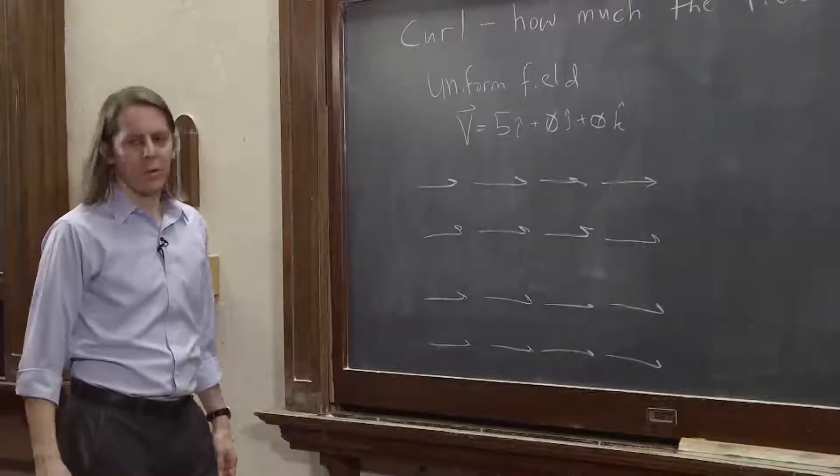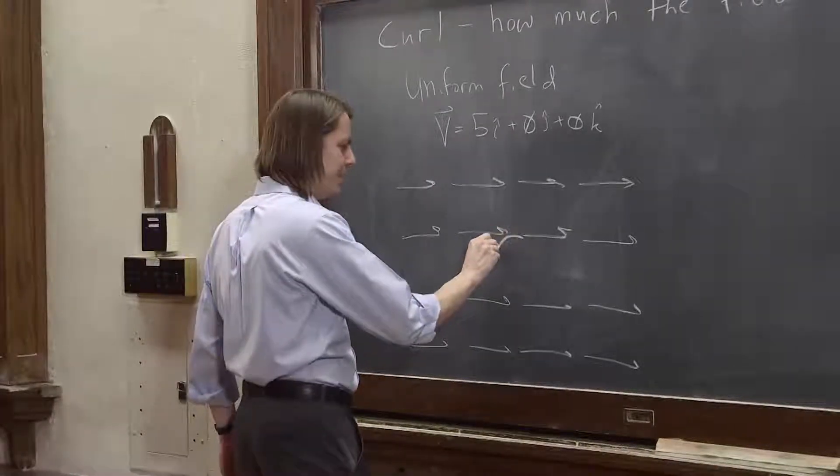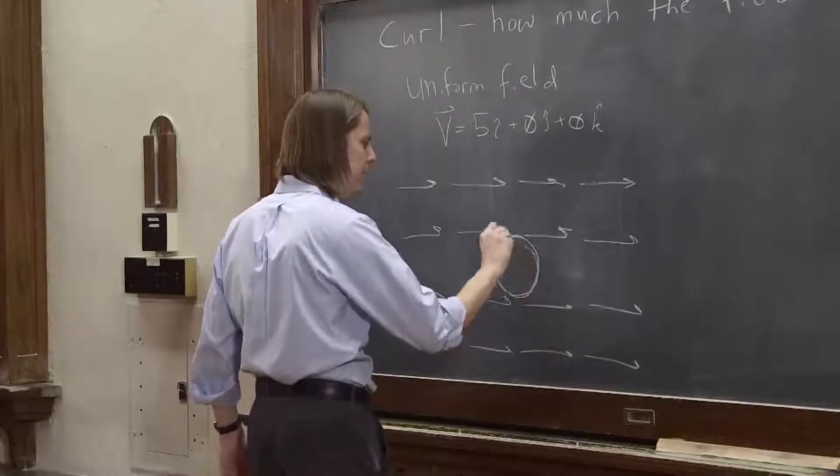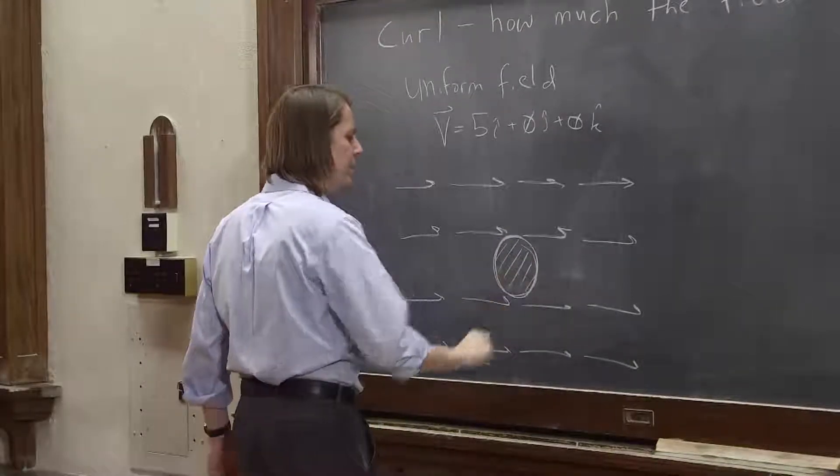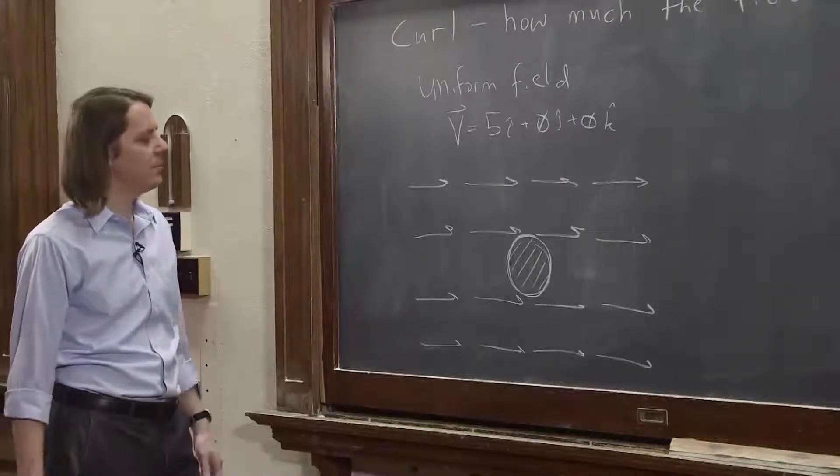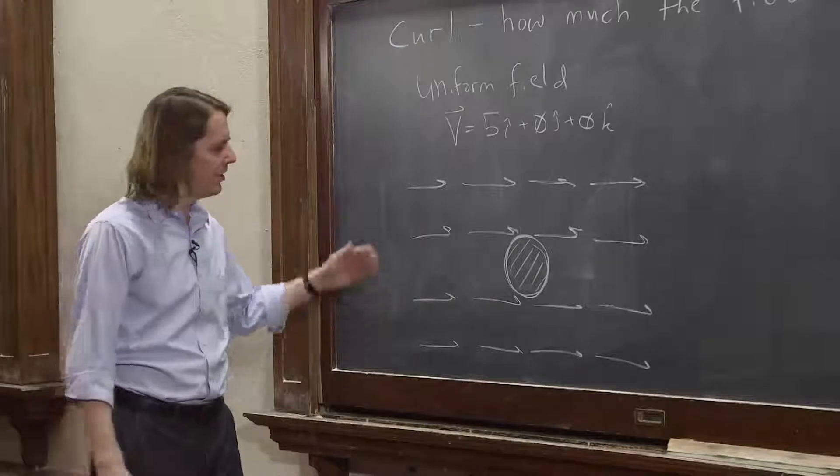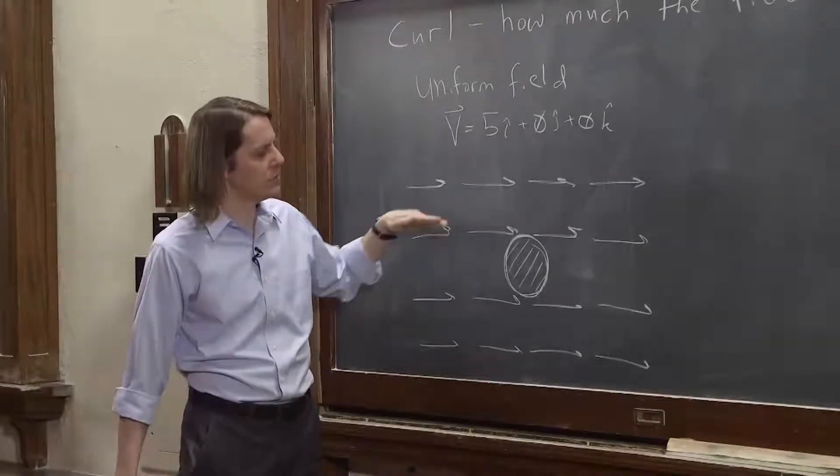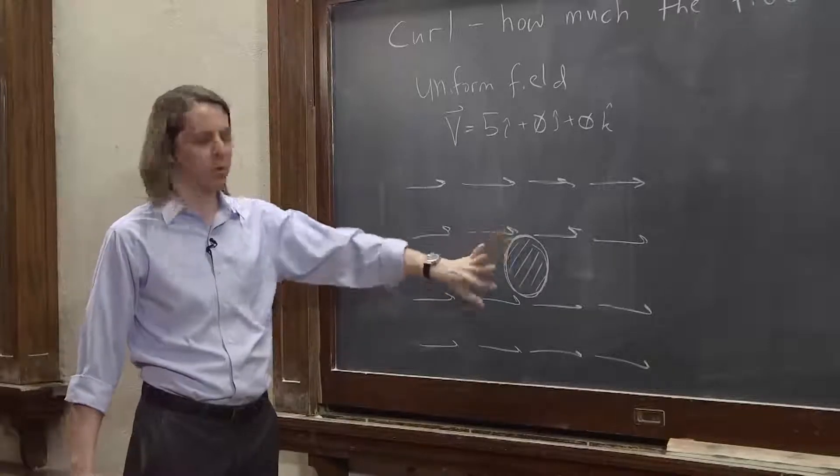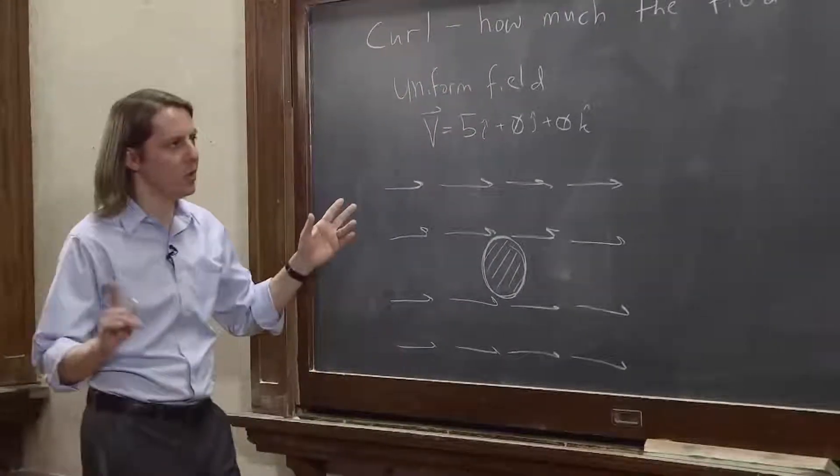So to decide visually if something has curl, I like to just imagine drop a disk in it like this. Put in a disk, a little solid disk. Of course, we're thinking in two dimensions. It's really a three-dimensional field. But let's just do it and think about it in 2D. And ask yourself, will the disk start to twist? If we think of the field vectors as frictional forces pushing on the sides of the disk, will it feel a net torque? Will it twist? That's what I mean. How much does the field make something twist?